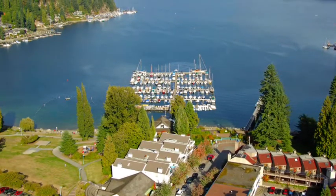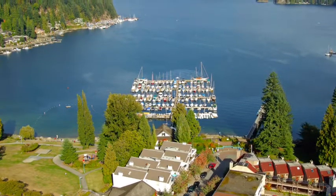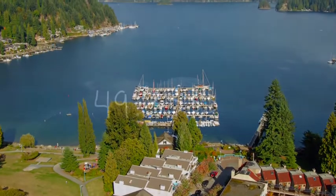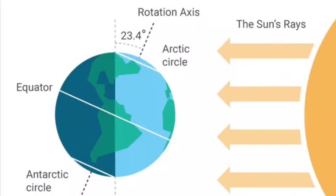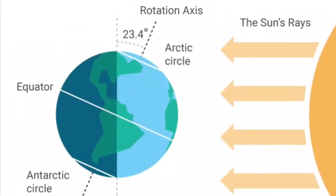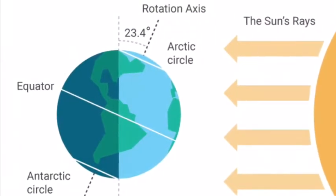So, let's say we want to find the ideal angle for Deep Cove in Vancouver, Canada. Deep Cove's latitude is 49.3335 and we want to know the angle for summer solstice. During the summer solstice, the angle of the sun is at positive 23.5 degrees.